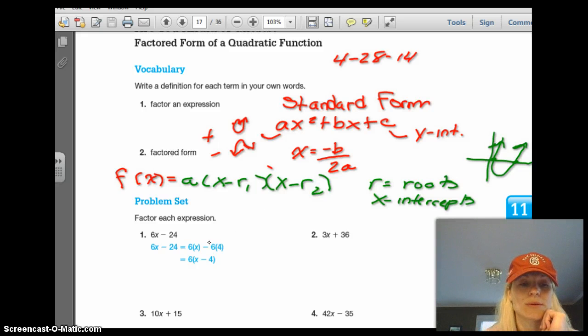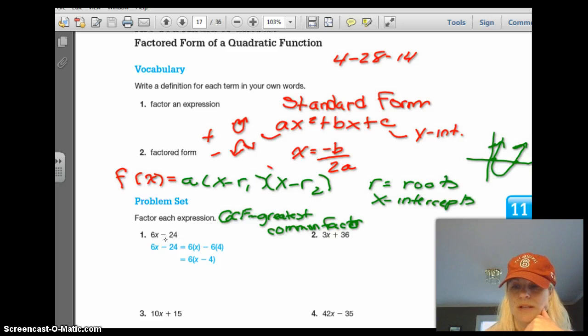So when we factor, as we did with this, the first thing we look at is we look for the GCF. The GCF, as you should know, is the greatest common factor. And basically what that means is we're looking for the biggest number that will divide into both of these. So hopefully we know that 6 is a factor of 6 and 24.